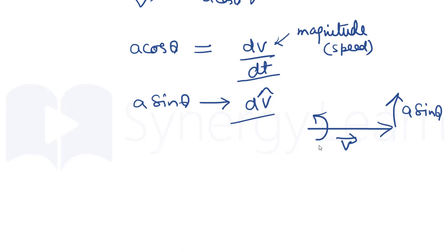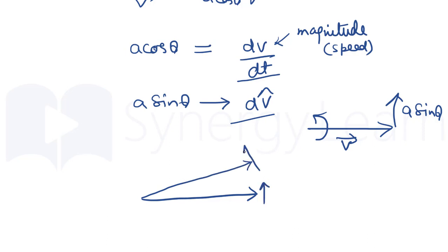Let us see what stands for the direction change of the vector. When a vector changes its direction — which is brought about by the perpendicular component of acceleration in the case of velocity — its angle changes, that is, it rotates. So it is represented as dθ/dt cross the vector, which in this case is velocity.